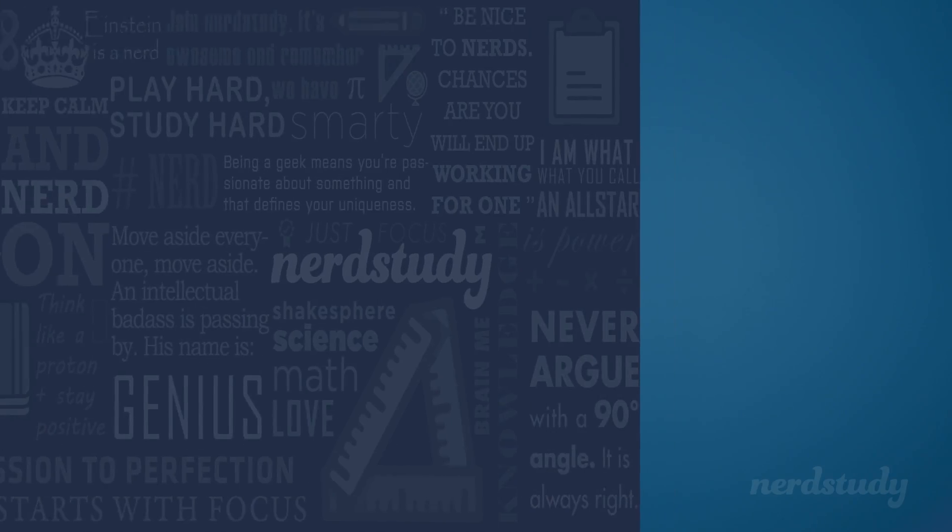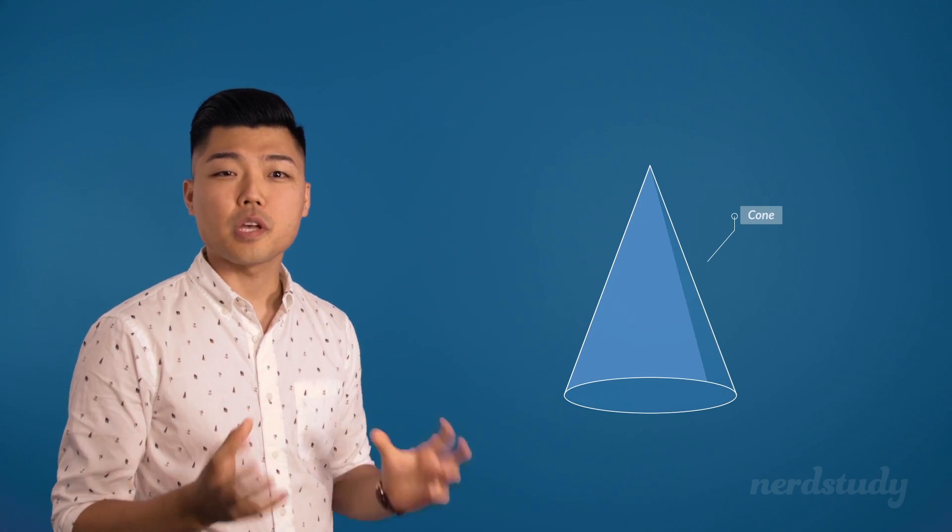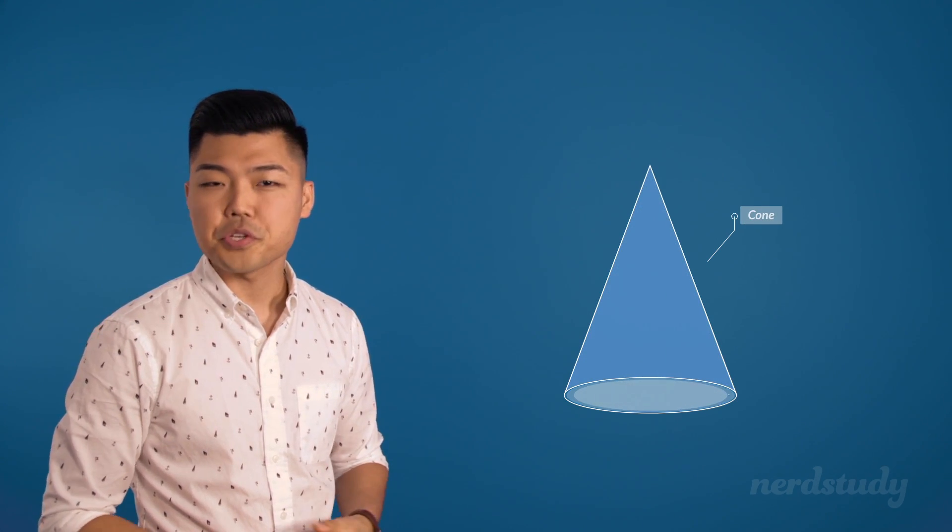What's up guys, in this video, we're learning about how to find the surface area of a cone. Alright, so let's consider an ice cream cone, except without the actual ice cream of course. So this is what a cone looks like. Its surface wraps around, and the bottom is a circle.